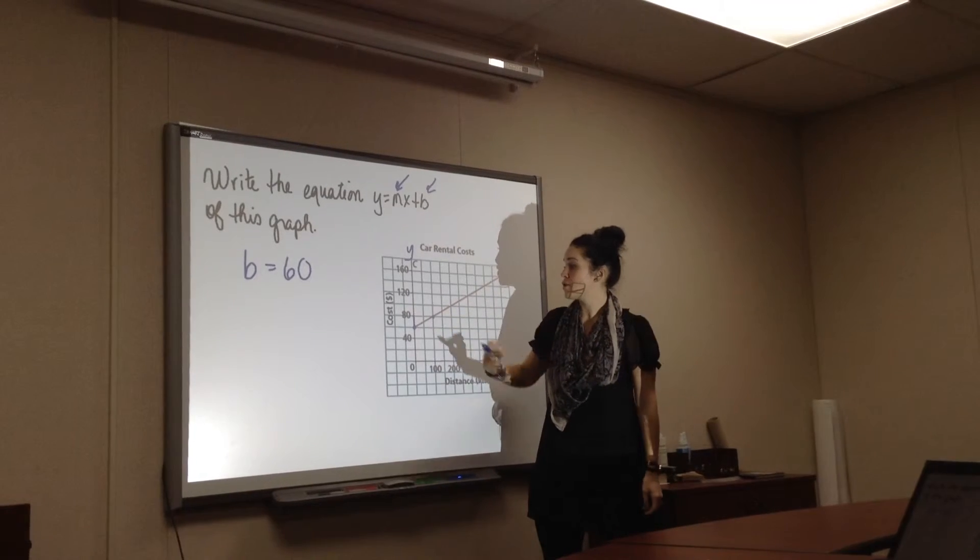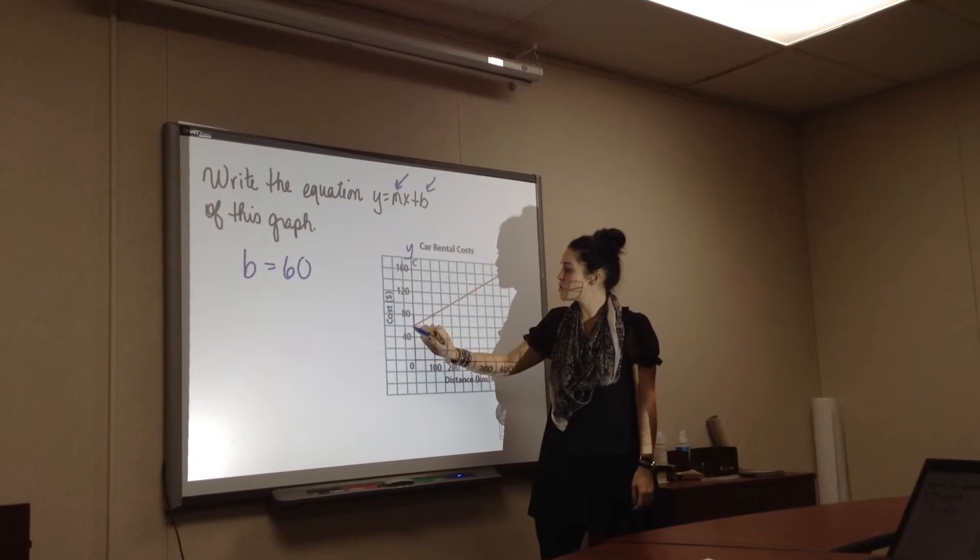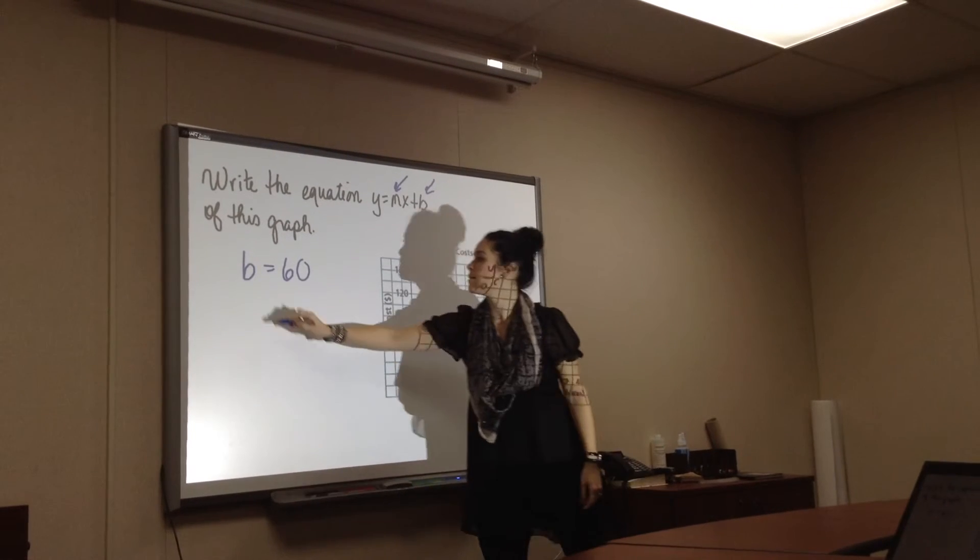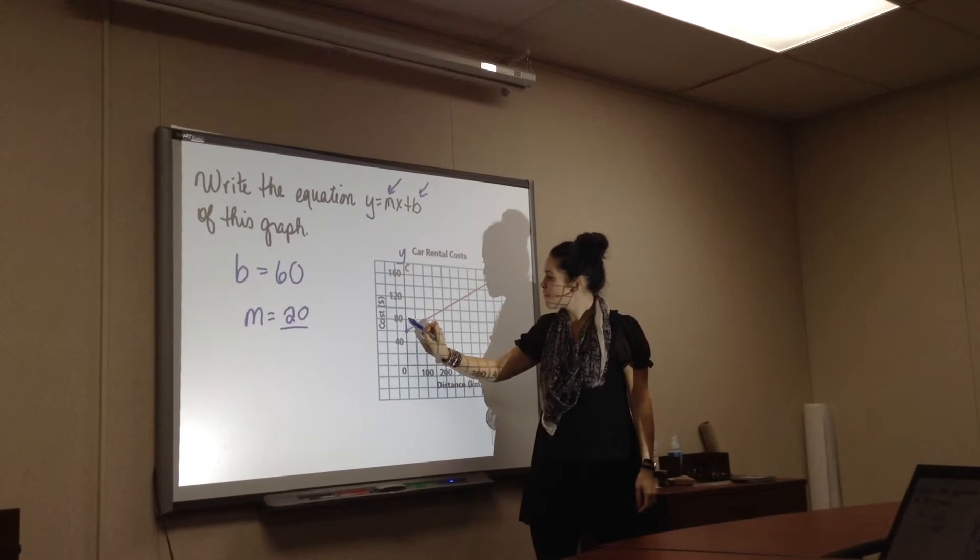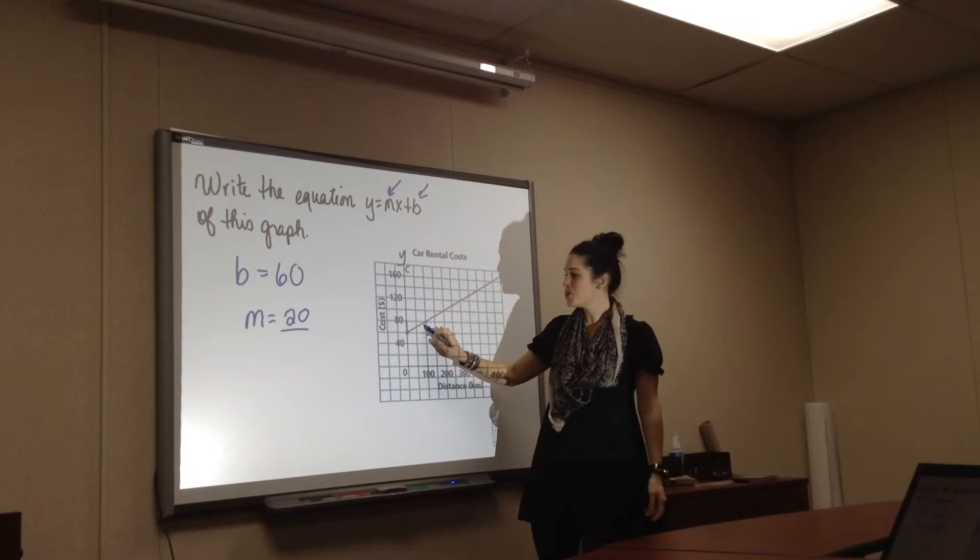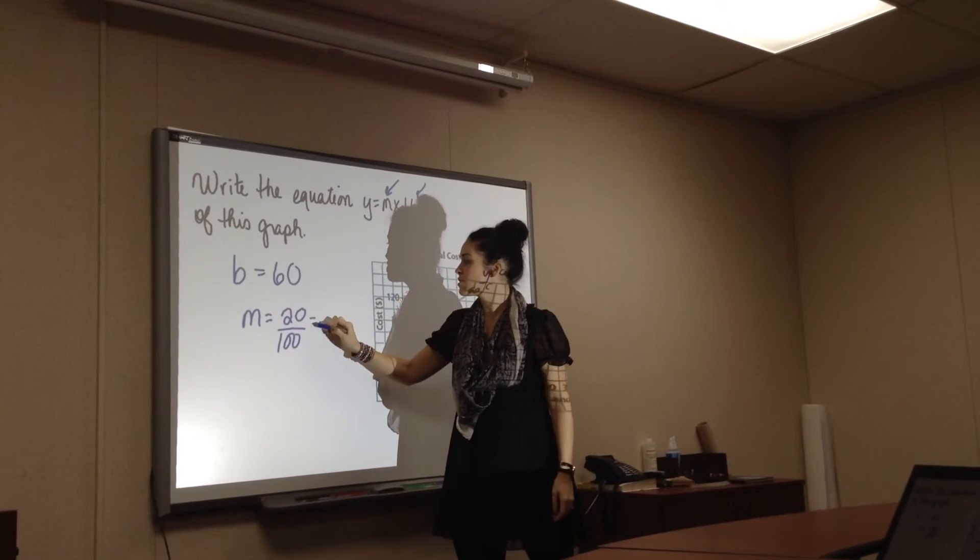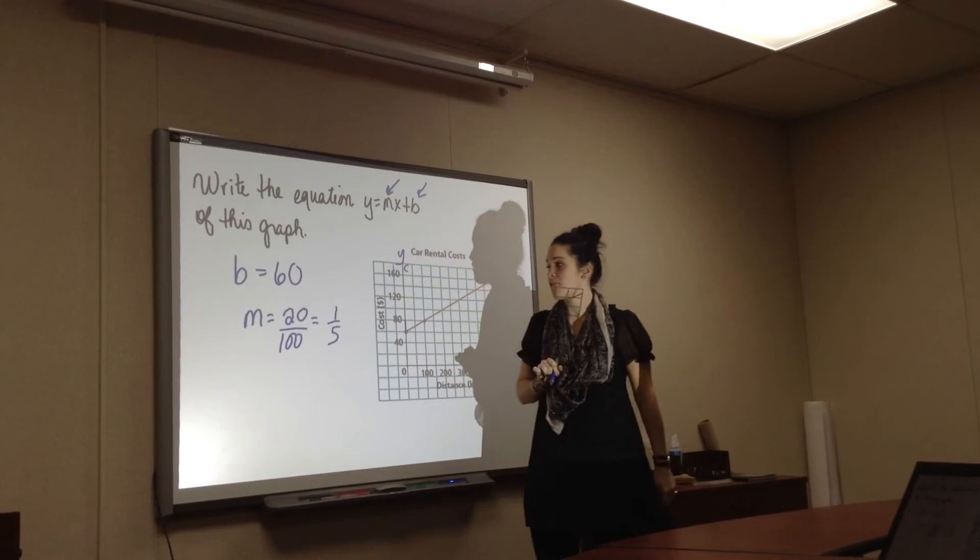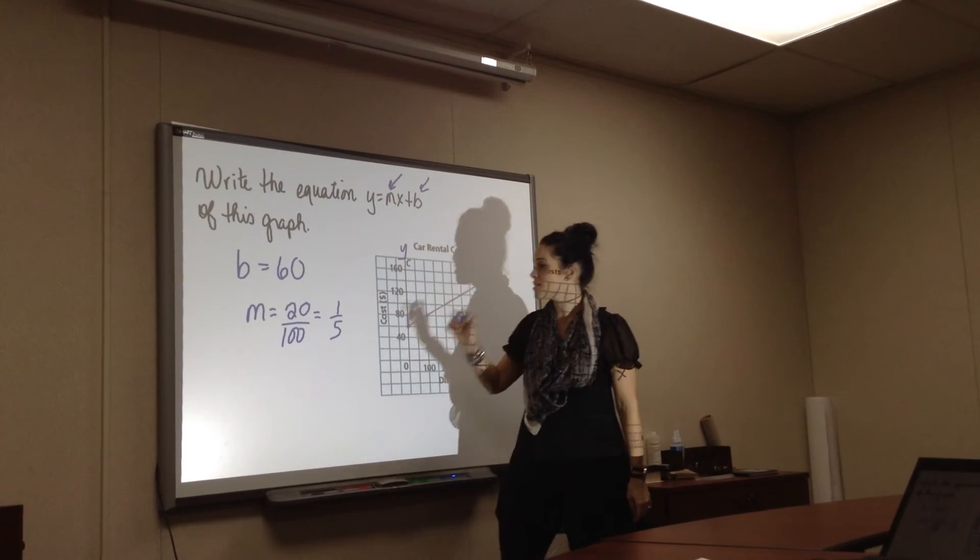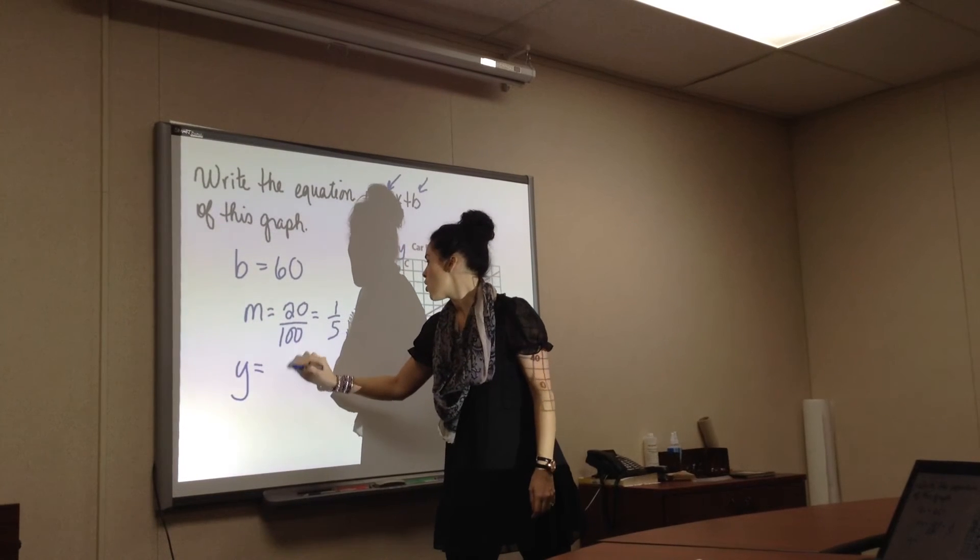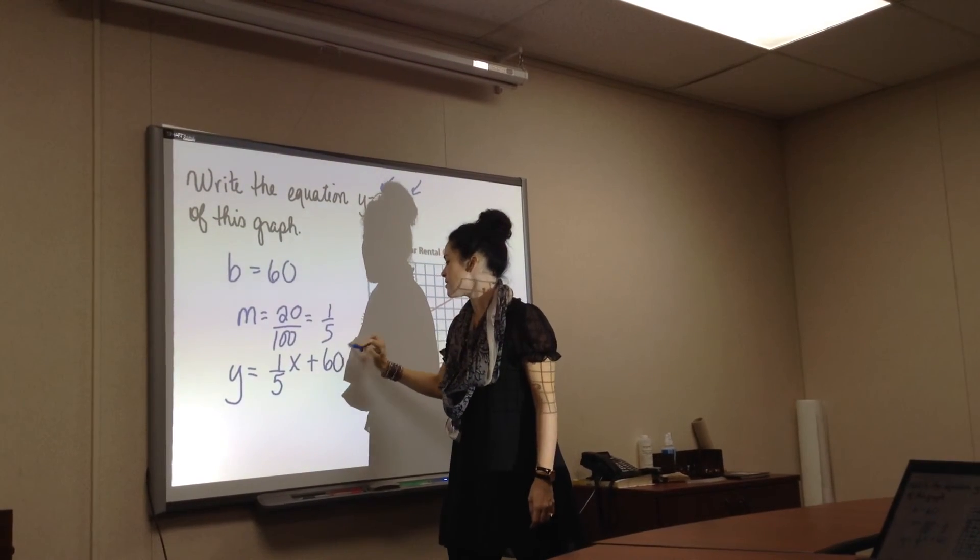rise of 20, and not 1, but 20. A lot of kids make that mistake. So there's a rise of 20 and a run of, we would like to say 2, but here it would be 100. So the slope is actually 1 fifth. So if I want to write the equation that represents this linear relation, it would be y equals 1 over 5x plus 60.